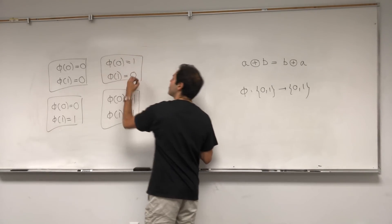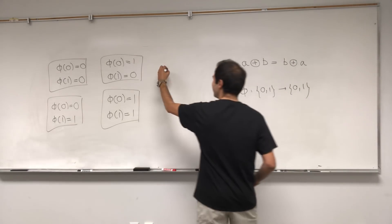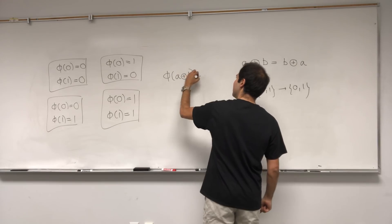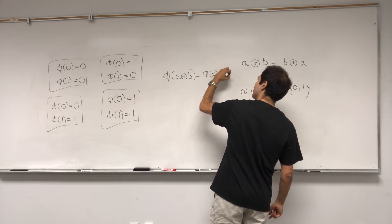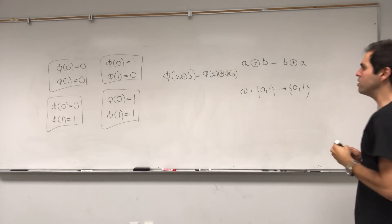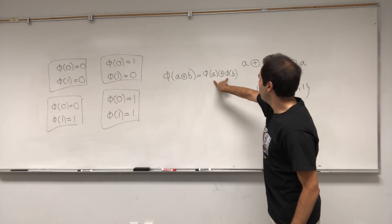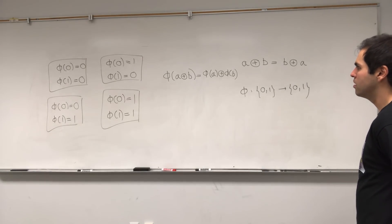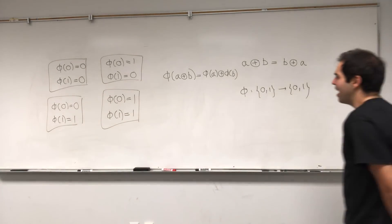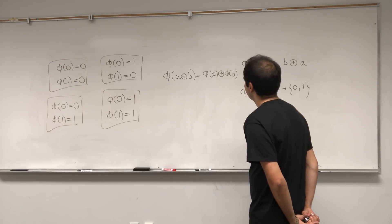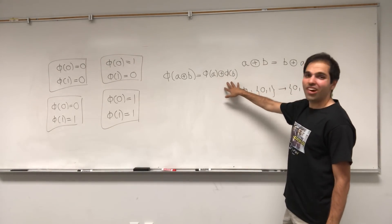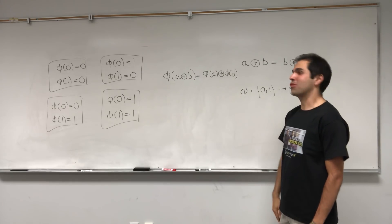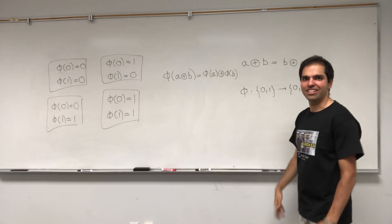It turns out all four of them are interesting because they all have this nice property where phi of lasagna addition gives lasagna addition of the results. That's what's called a homomorphism — or what I like to call a lasagnomorphism. It's a function that preserves the structure of lasagnas, which algebraists really care about.